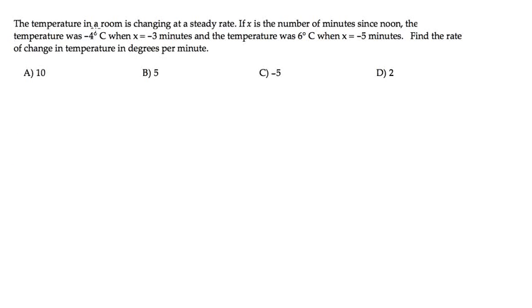Here we have the temperature in the room is changing at a steady rate. If x is the number of minutes since noon, the temperature was -4°C when x was -3 minutes, and the temperature was 6°C when x was -5 minutes. We need to find the rate of change in the temperature in degrees per minute.